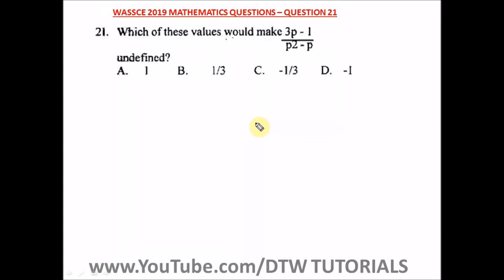Question 29 of the WASSCE 2019 mathematics past question says: which of these values would make 3p minus 1 divided by p squared minus p undefined? Okay, this question, always one question on undefined, always comes out on your WASSCE.